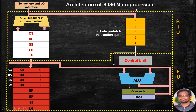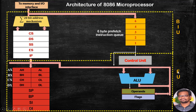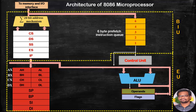Here is the architecture of the 8086 microprocessor. The architecture is divided into two units in order to support the pipelining process. The two units present are BIU, the bus interface unit, and EU, the execution unit. BIU is used to interface the microprocessor to the external world, and the execution unit comprises the operations specified in the instructions and the various registers supporting those executions.